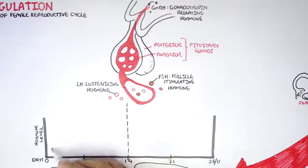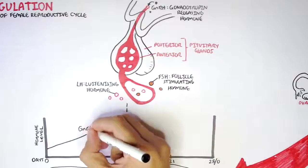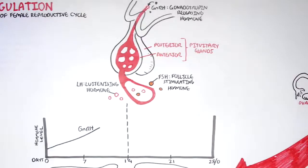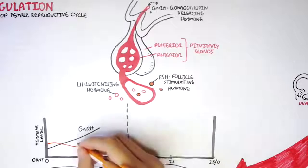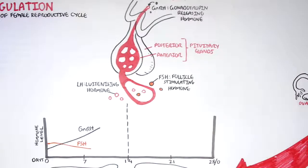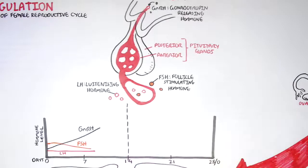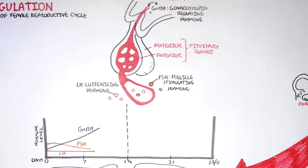Initially, at the beginning of the menstrual cycle, there is an increase in gonadotropin-releasing hormone secreted by the hypothalamus. This should cause a steady increase in both FSH and LH. But instead we see an increase and then a slow drop in FSH, and a steady level of LH. The reason is quite complicated, but hold on to that thought.